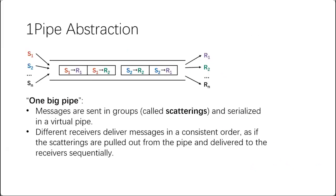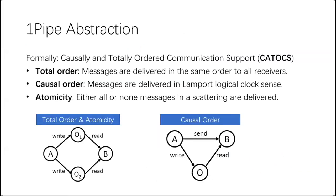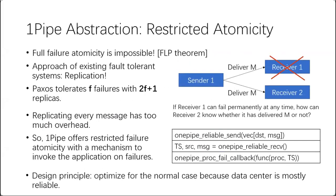We require a group of operations to be atomic in the case of concurrent transactions and failures. To avoid these ordering anomalies, we propose a one-big-pipe abstraction: messages are sent in groups called scatterings and serialized in a virtual pipe. Different receivers deliver messages in a consistent order, as if scatterings are pulled from the pipe sequentially. Formally, One Pipe provides causally and totally ordered communication, implying total order, causal order, and atomicity. One Pipe only provides restricted failure atomicity, as the FLP theorem already showed full failure atomicity is impossible.